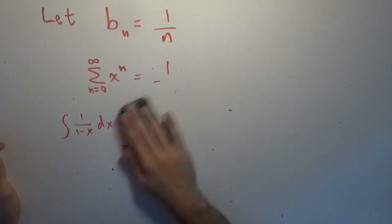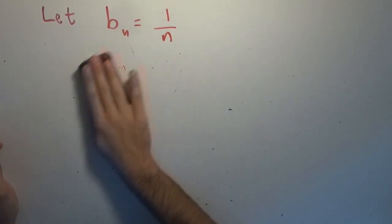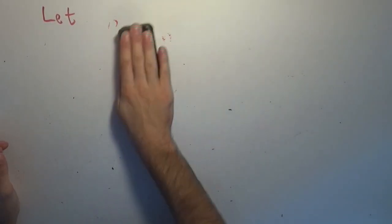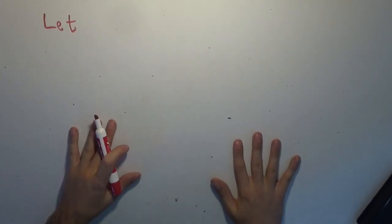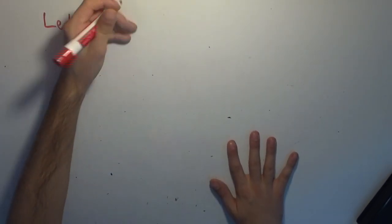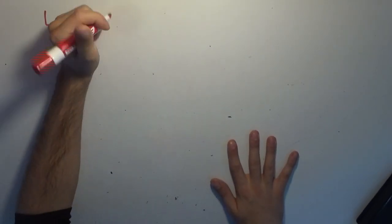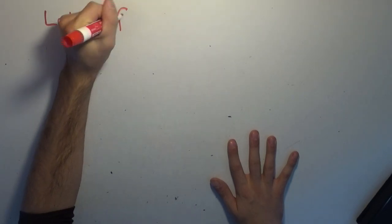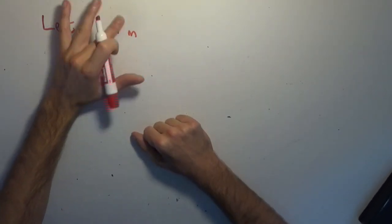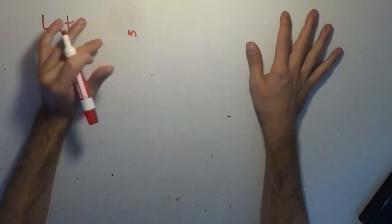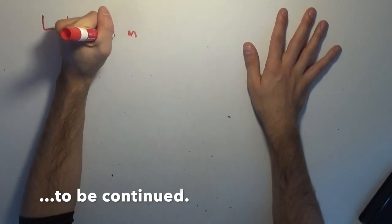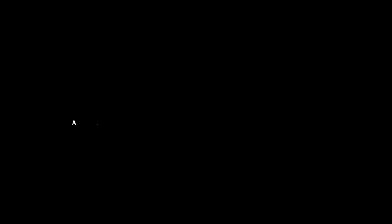Now we're going to explore a slightly different one — a bit off the beaten path — and we'll call this one capital F sub n, which hopefully piques your curiosity as to why I jumped from b to F.